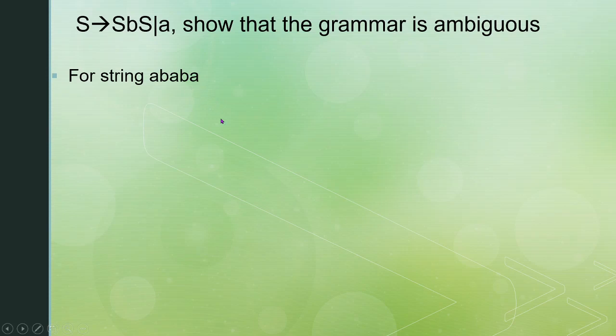The string is A B A B A. Starting the derivation: S gives S B S. I will select S B S as the first production. That gives the first step of the derivation tree.